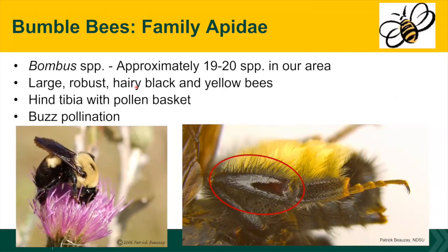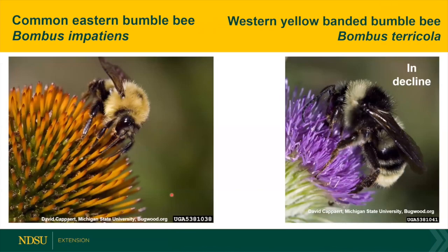Bumblebees are also Apidae. They're one of the largest bees and there are about 20 species in our area. They're pretty easy to identify — black and yellow. They have the basket area on the hind leg and tibia, and they do the buzz pollination that we already discussed. Here are a couple of species: the common eastern bumblebee, Bombus impatiens, and the western yellow-banded bumblebee, Bombus terricola. This one happens to be in decline.